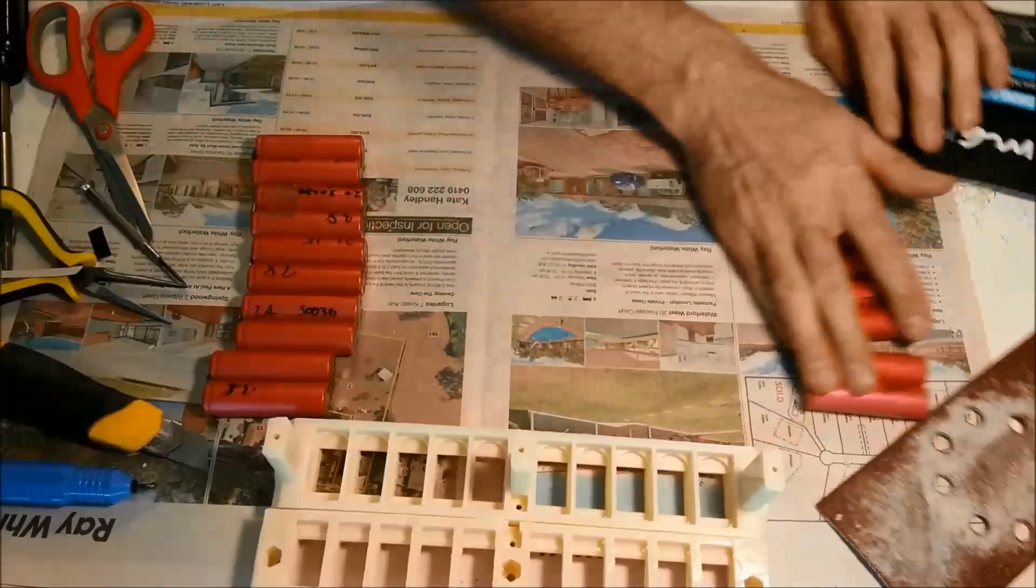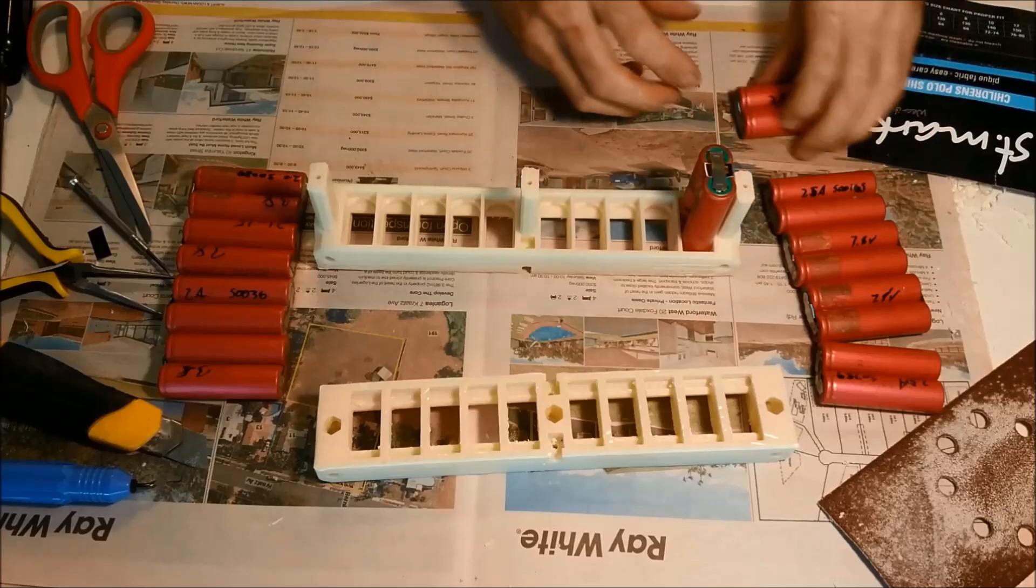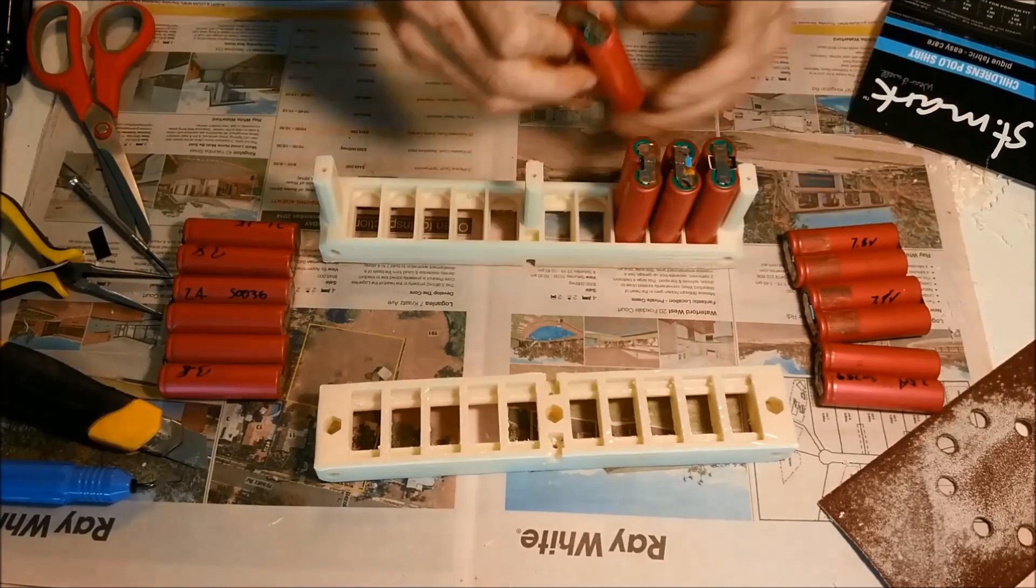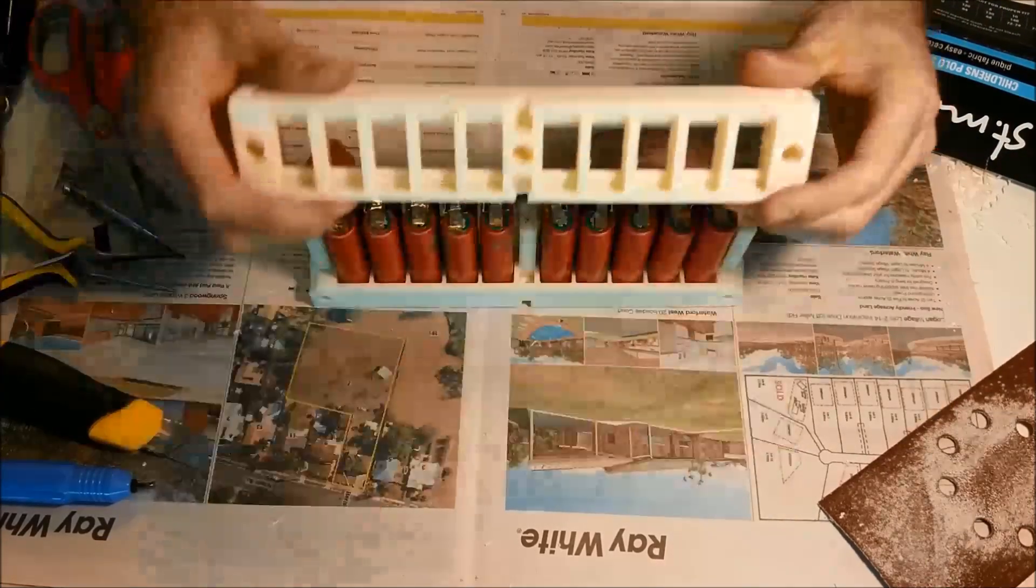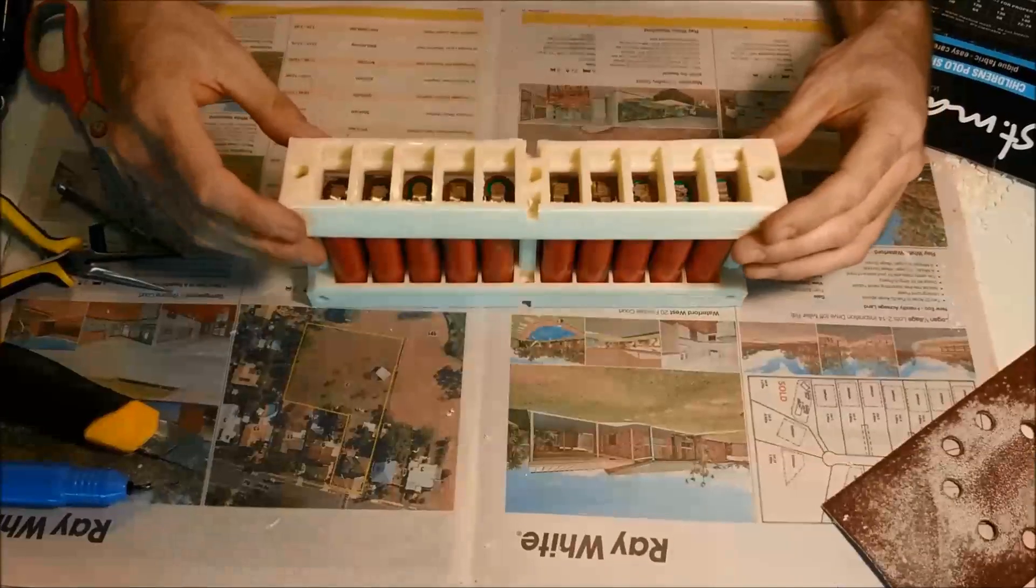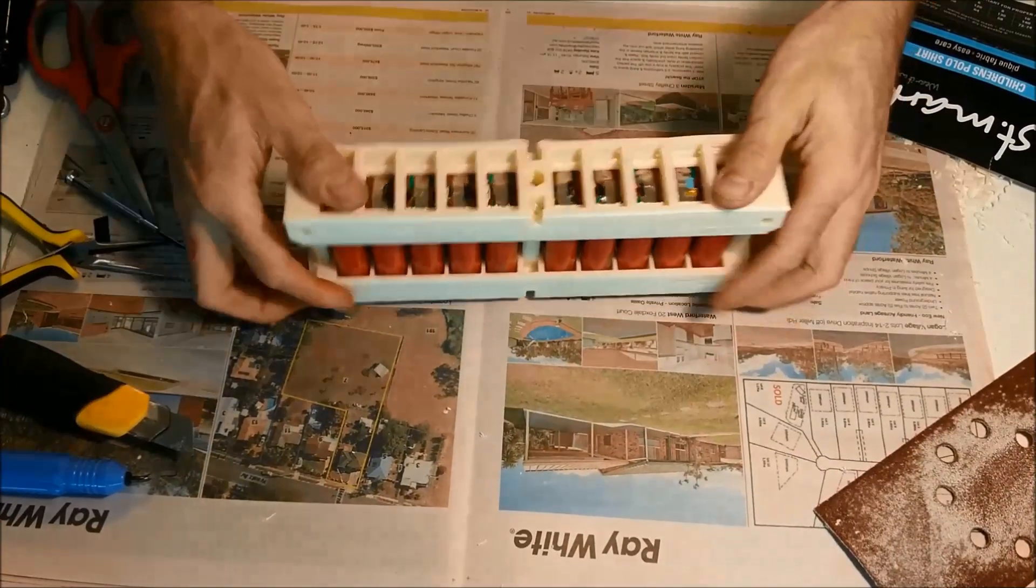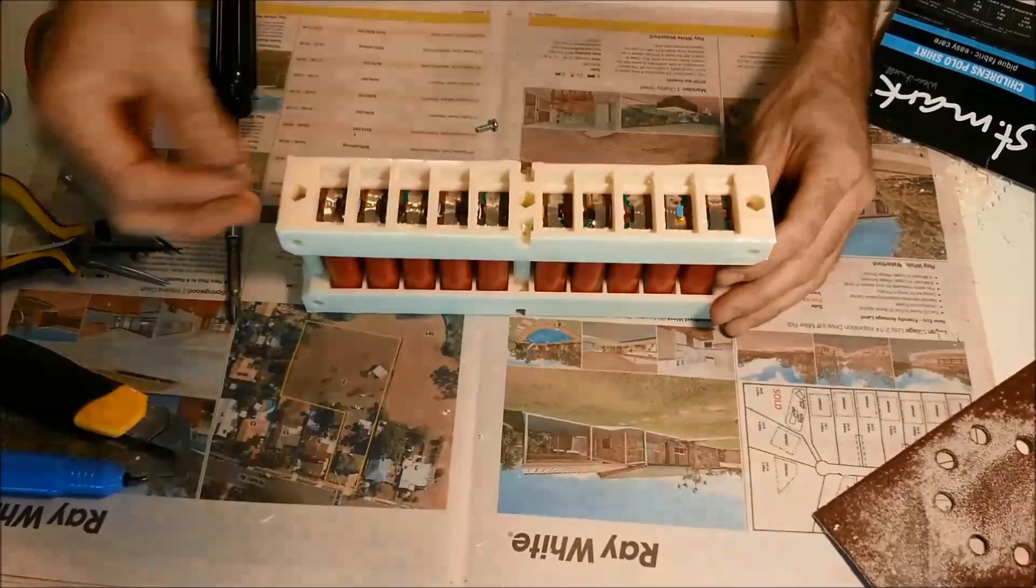So now we can install the batteries into the modules. We're going to face them all the same way and install the other side of the module. Put the top three screws in.